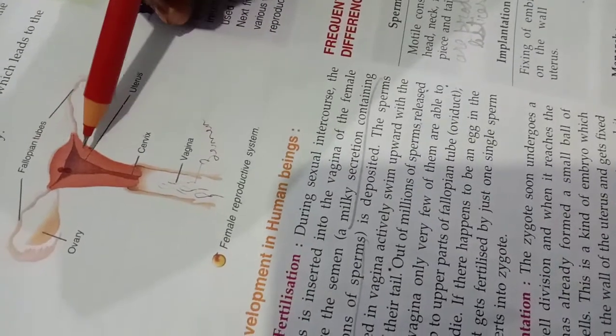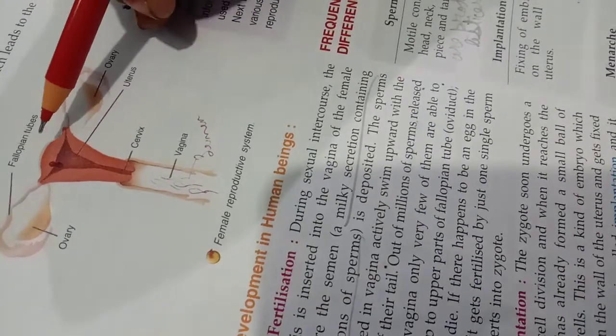So what happens? There are millions of sperms I said earlier also. So the ovum or the egg which lies in the oviduct or fallopian tube, one of the sperm will be able to penetrate into the egg or the ovum. And fertilization will occur. After fertilization, what happens?